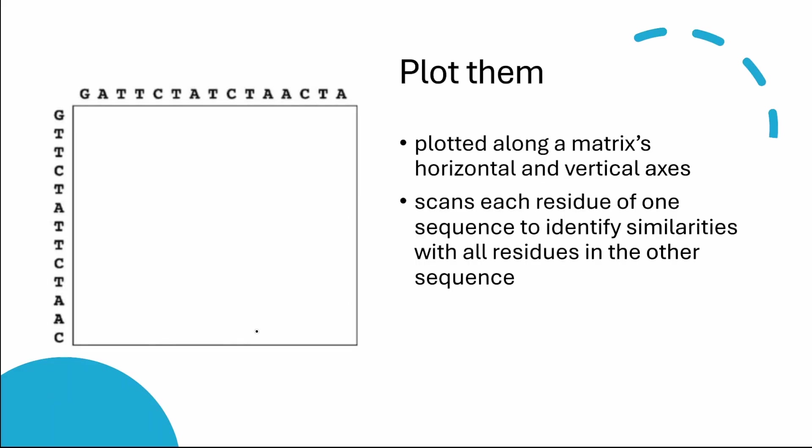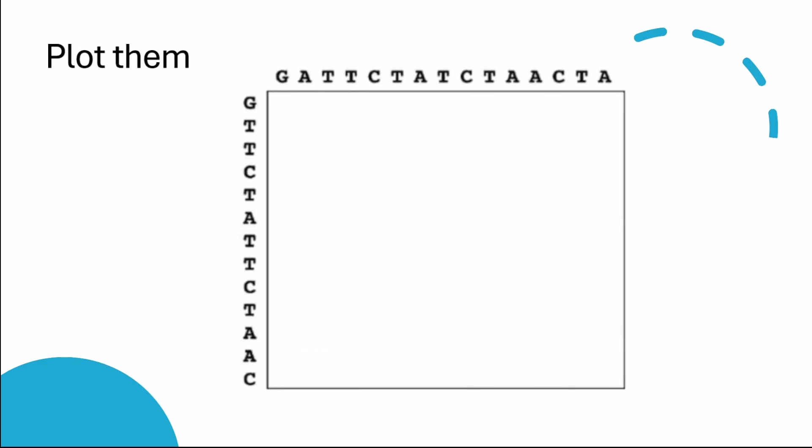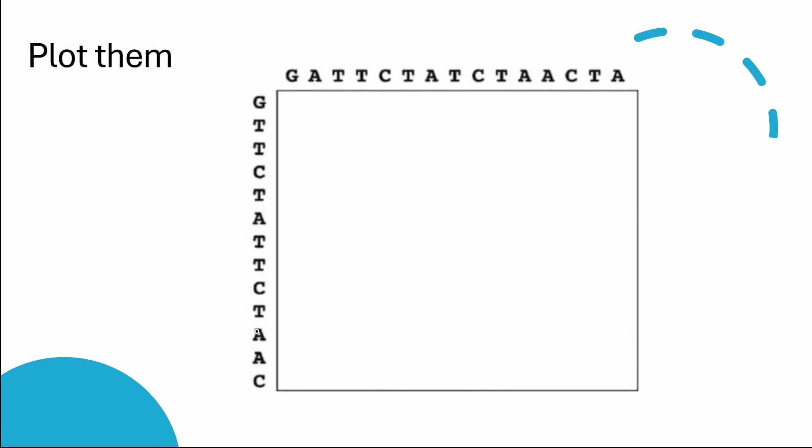The method then scans each residue of one sequence to identify similarities with all residues in the other sequence. If a residue in one sequence matches a residue in the other sequence, a dot is placed in the corresponding position in the matrix. Otherwise, the matrix position is left blank.